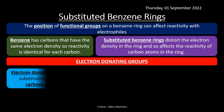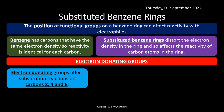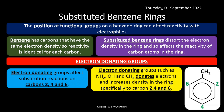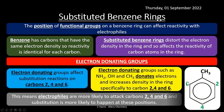If we've got electron donating groups instead — such as NH2, OH, or CH3 — these donate electrons into the benzene ring, increasing electron density. The big impact is that electrons are specifically pushed into carbons 2, 4, and 6. So if you have an electron donating group on a benzene ring, you're more likely to get electrophilic substitution occurring at carbons 2, 4, and 6. Keep your eyes peeled for that and make sure you're aware of it.